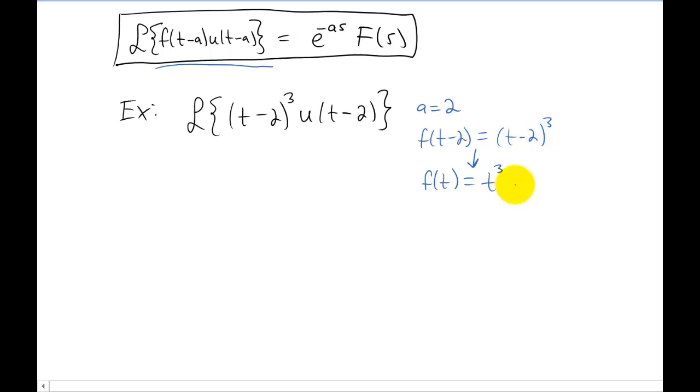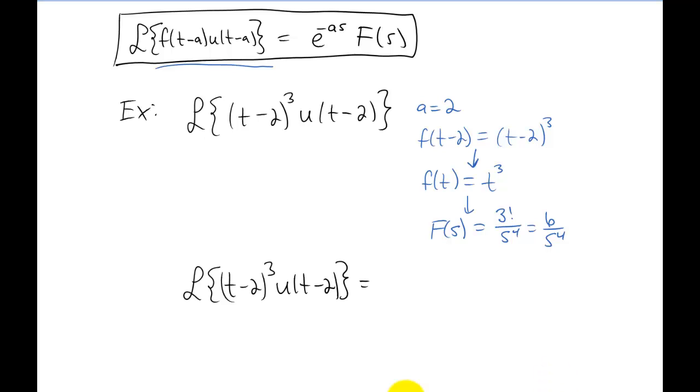If that's not clear, we'll have a couple different ways of explaining that in class. But f of t is now t cubed. And now that we have little f of t, we can take the Laplace transform of little f of t to find capital F of s. So capital F of s in this example is going to be 6 over s to the fourth power. And now we have everything we need on this right hand side of the formula to get our answer down here.